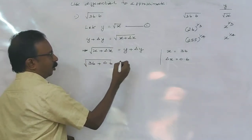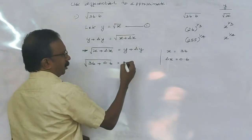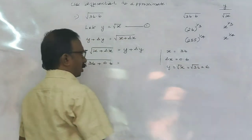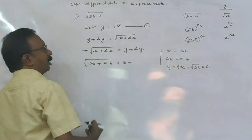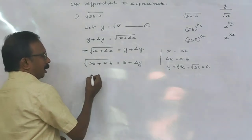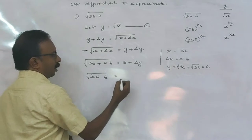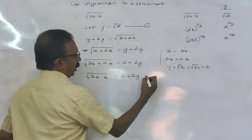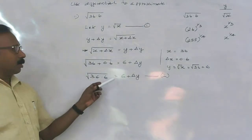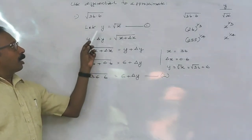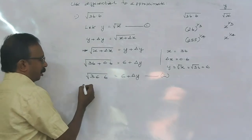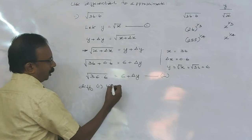Since y equals root of x, root of 36 equals 6. So root of 36.6 equals 6 plus delta y, which is equation number 2. Now we differentiate equation 1 with respect to x: dy/dx equals 1 divided by 2 root x.